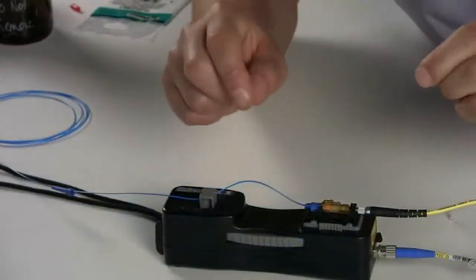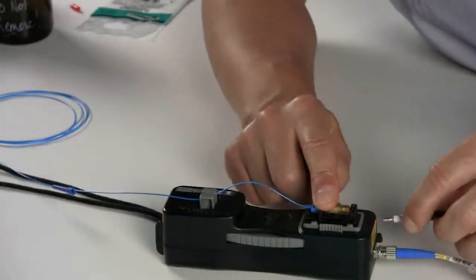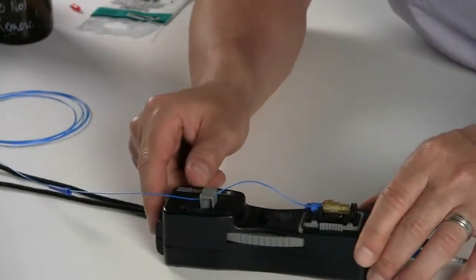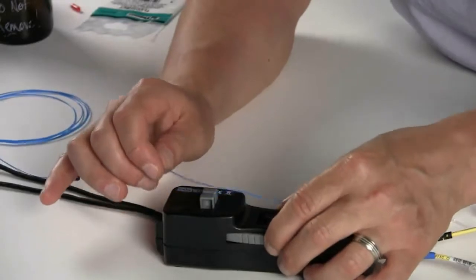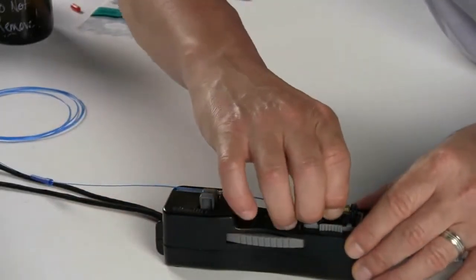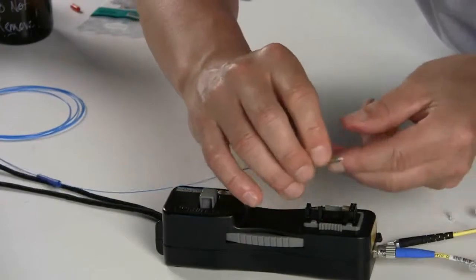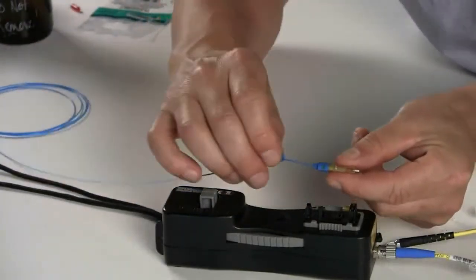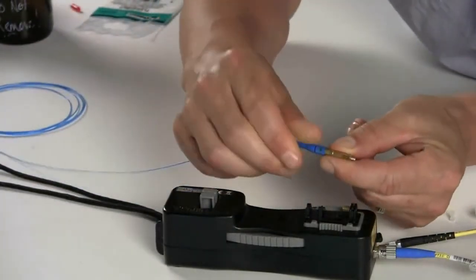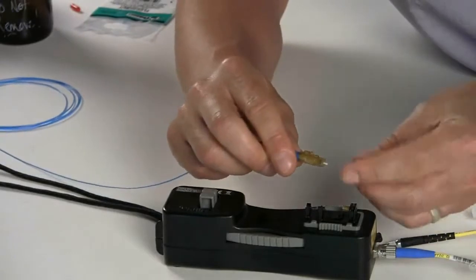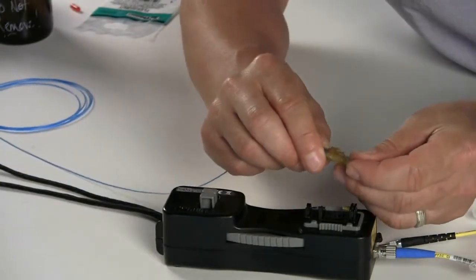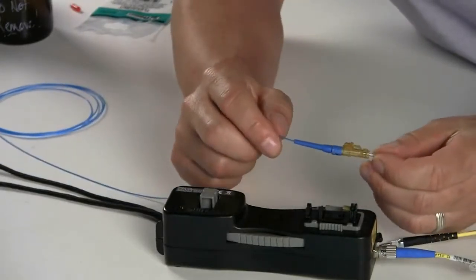When the connection is done, remove the VFL cord from the connector, shut off the VFL, release the buffer from the fiber clamps, remove the connector, and then slide the connector boot onto the body, and replace the dust cap, and the OptiCam termination is complete.